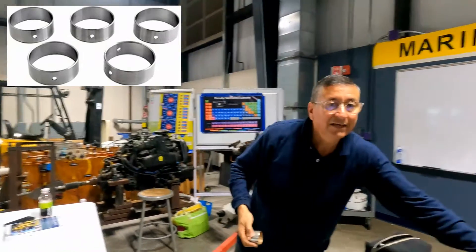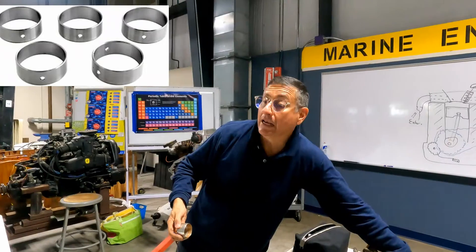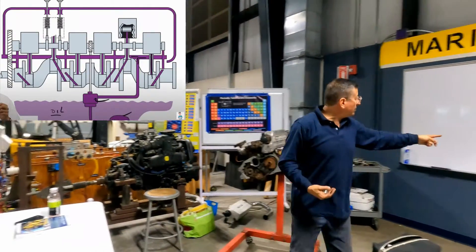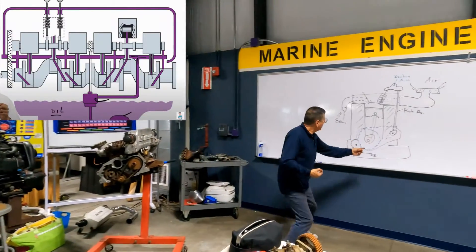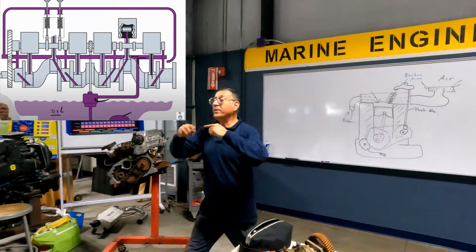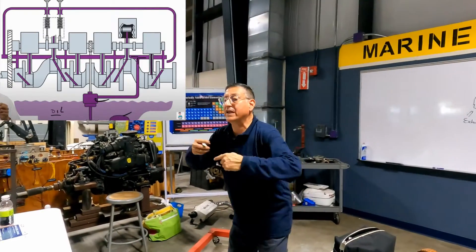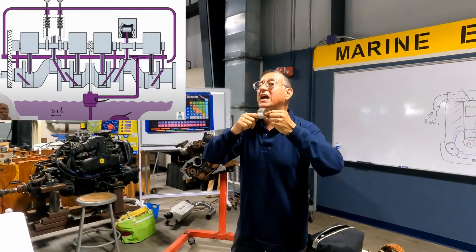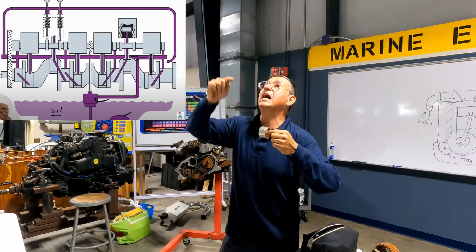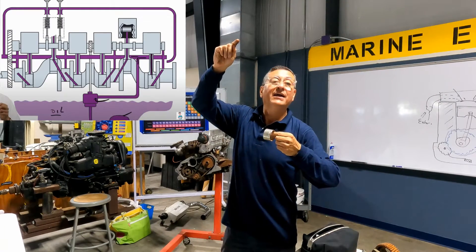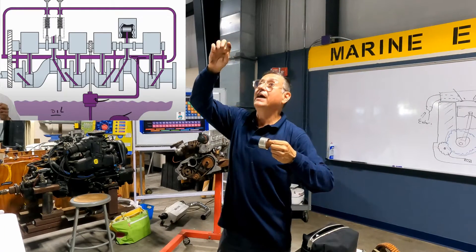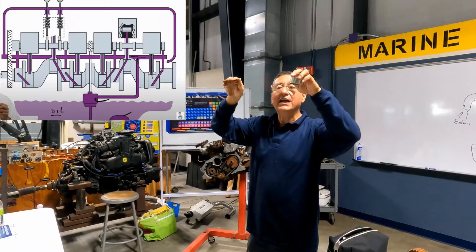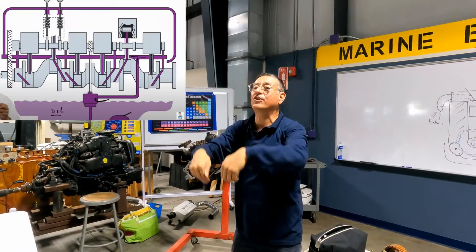Look at this. The oil suction from the oil pump at the bottom enters here, lubricates the bearings of the crankshaft, goes up, lubricates the bearings of the cam and goes up, lubricates the rocker arms and goes down by gravity.